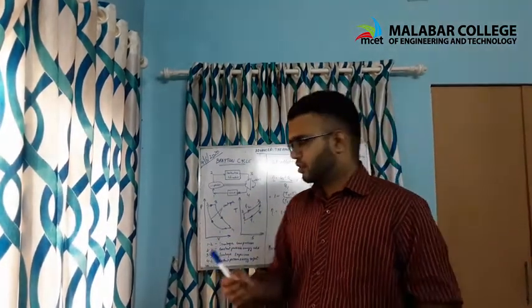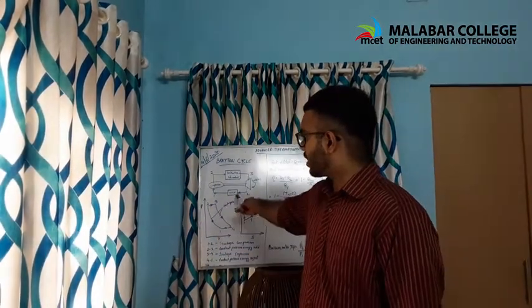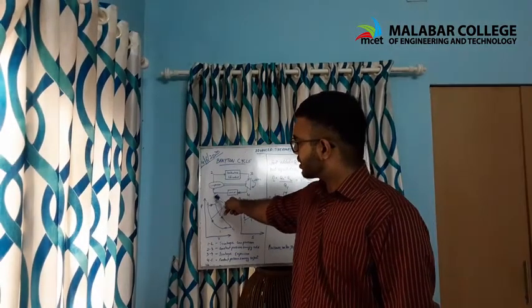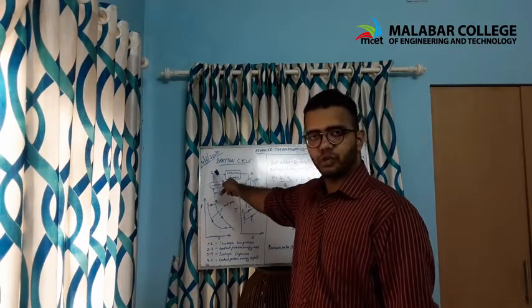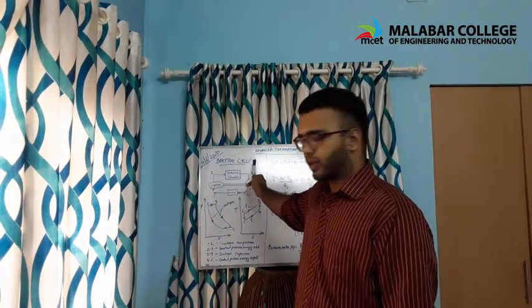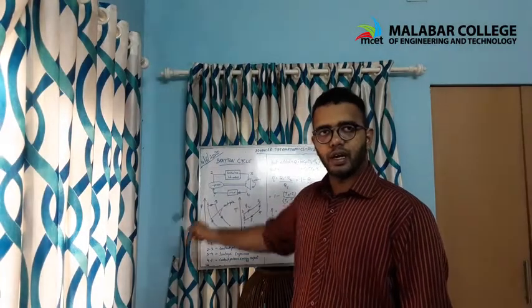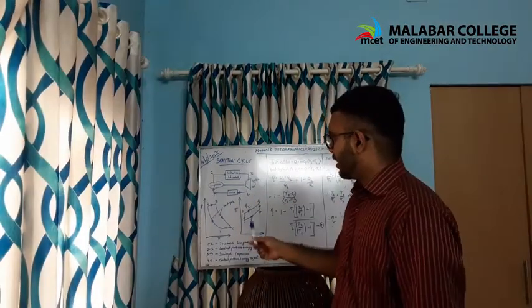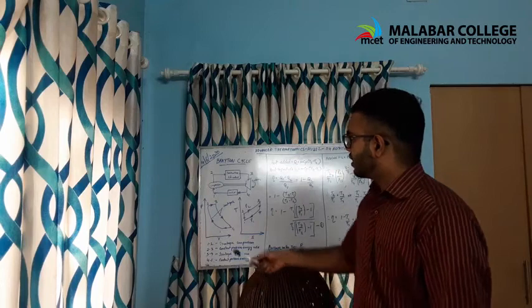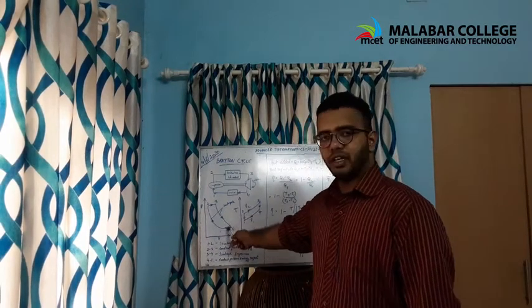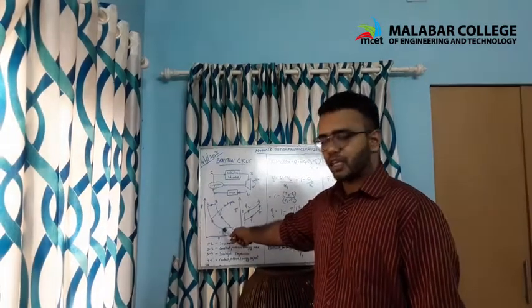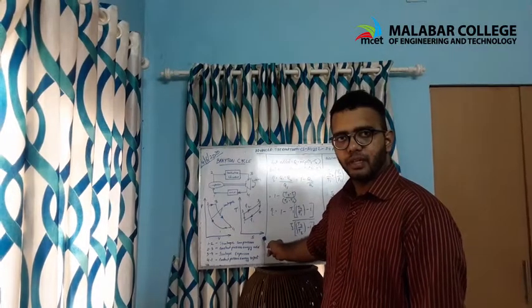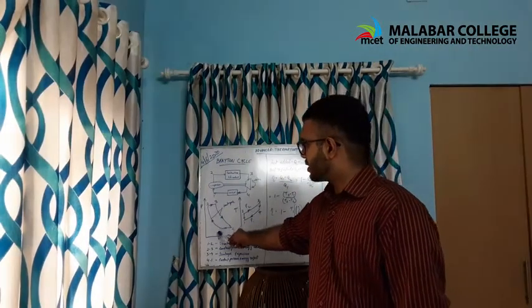Since the heat released is very high, we need to reduce it, so a cooler is provided. The processes go: 1 to 2, 2 to 3, 3 to 4, and then 4 to 1 — and the cycle repeats. Here is the PV diagram of the Brayton cycle, and here comes the TS diagram.